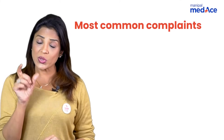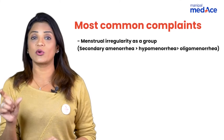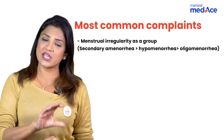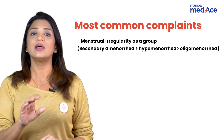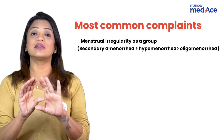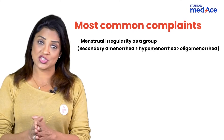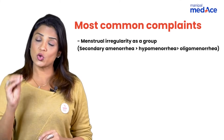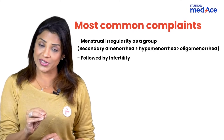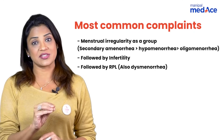What are the most common complaints the patient presents with? As a group, menstrual irregularity — which includes secondary amenorrhea, oligomenorrhea, and hypomenorrhea meaning scanty periods — are the main complaints of the patient with Asherman's. The second group of complaints is infertility, and the third is recurrent miscarriages.